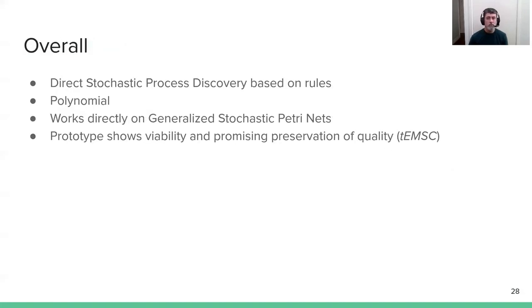Overall, we introduced a technique, or framework of techniques, which do direct discovery of stochastic process models. It's based on the repeated application of reduction rules. The polynomial time algorithms work directly on generalized stochastic Petri nets as an internal data structure using the view of a probabilistic process tree, and then they also output generalized stochastic Petri nets. We developed a prototype that shows the viability of the technique, and it also showed in experiments promising preservation of quality as measured by the Earth Movers Distance.